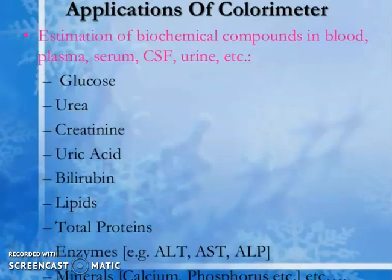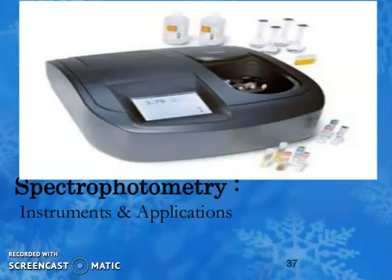Applications of the colorimeter include estimation of biochemical compounds in plasma, serum, CSF, and urine — such as glucose, urea, creatinine, uric acid, bilirubin, lipids, proteins, enzymes, and minerals.